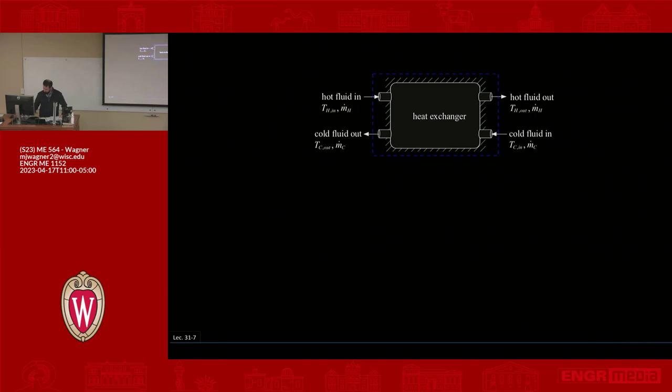If we draw our control volume as I've drawn here with the blue dotted line, we have to keep inventory of what's going in and what's going out. Going in we have hot fluid, we have cold fluid. Going out we have cold fluid and hot fluid. So we need to do the full energy balance on this.